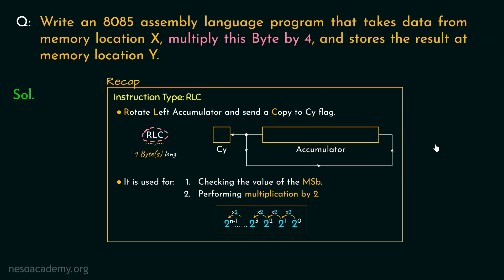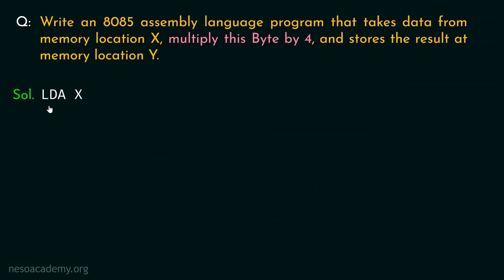Let's now try and write the program. We are supposed to take the data byte from memory location X, and in order to execute RLC the data should be inside the accumulator. So we will use the data transfer instruction LDA X. Now the data from location X has been loaded into the accumulator, so all we have to do is execute the RLC instruction twice, which multiplies the data by 4. After this, we are also supposed to store the result at memory location Y.